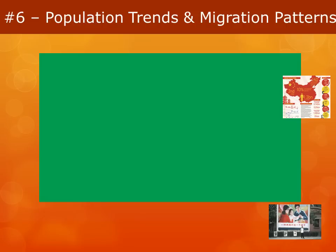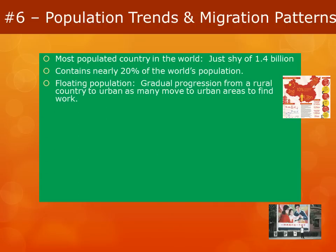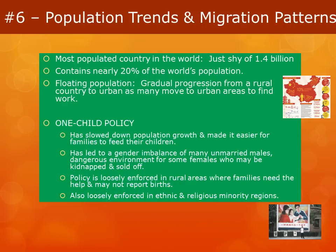China is the most populated country in the world, with a population just shy of 1.4 billion — nearly 20% of the world's population. China has today what we call a floating population, as there has been a gradual movement from rural areas to more urban areas in order to find work.